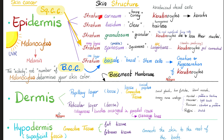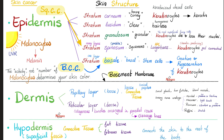The epidermis has five layers. Then we have the basement membrane, which is the dermo-epidermal junction. Then we have the dermis, followed by the hypodermis, which is connective tissue — and this is the same as superficial fascia, or subcutaneous tissue.